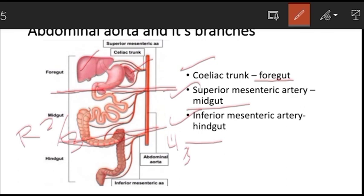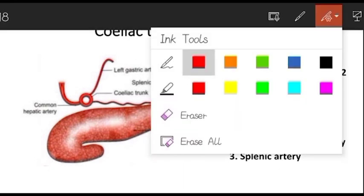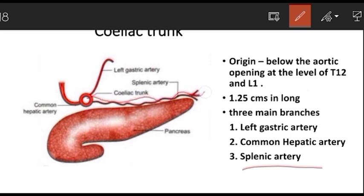The celiac trunk is a ventral branch of the abdominal aorta that arises just below the aortic opening of the diaphragm. The aortic opening is at the level of T12, so the celiac trunk arises between T12 and L1. It is 1.25 cm long and has three main branches: the left gastric artery, the common hepatic artery, and the splenic artery. The splenic artery is the largest branch and the left gastric artery is the smallest.